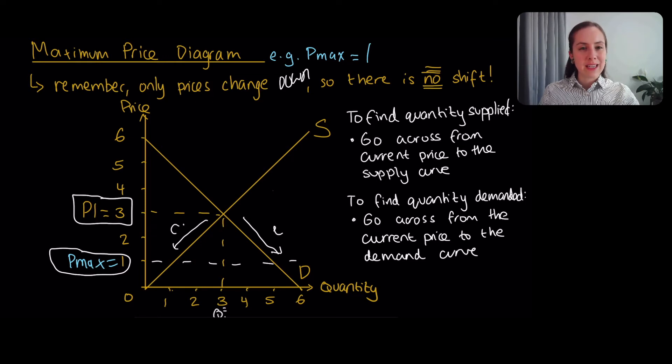Now, how do you find the exact price and quantity that now is supplied and demanded? We want to follow these rules. To find the quantity supplied, just go across from the current price, Pmax, and find the supply curve. That dot there, that's going to correspond to the quantity that is supplied. In this case, it's just 1.